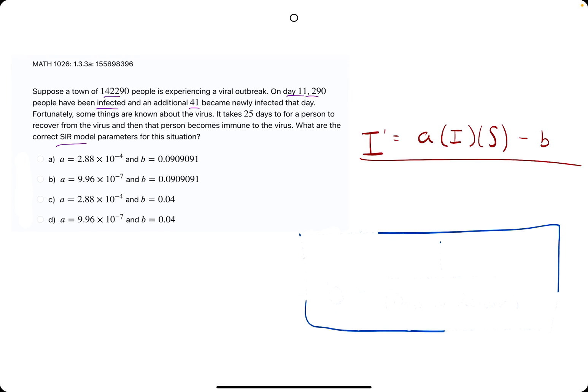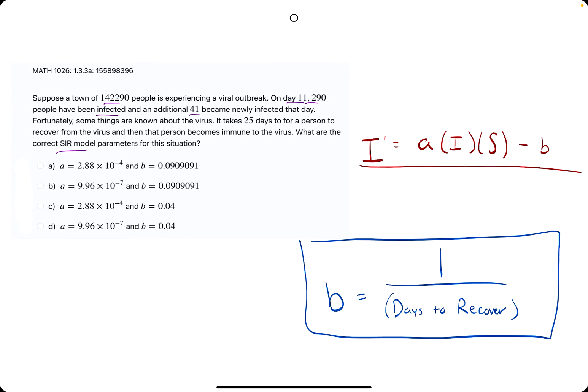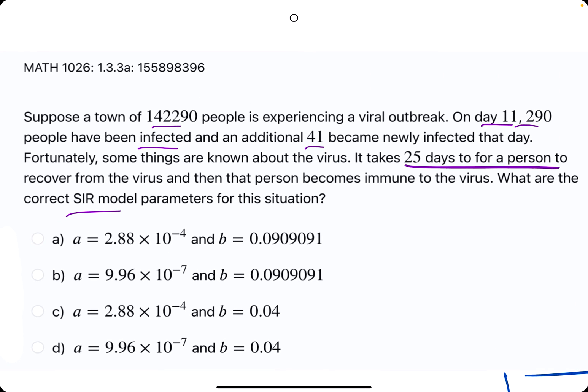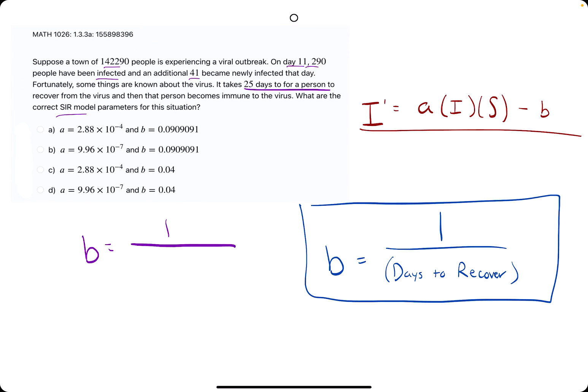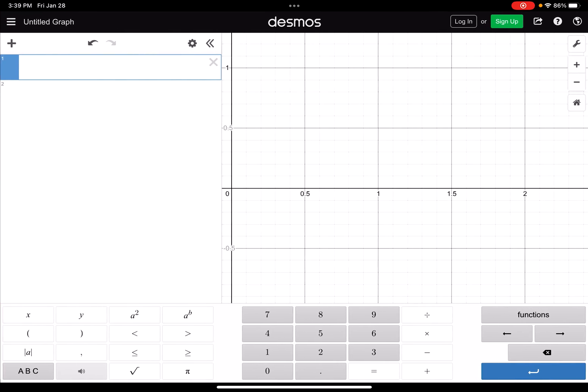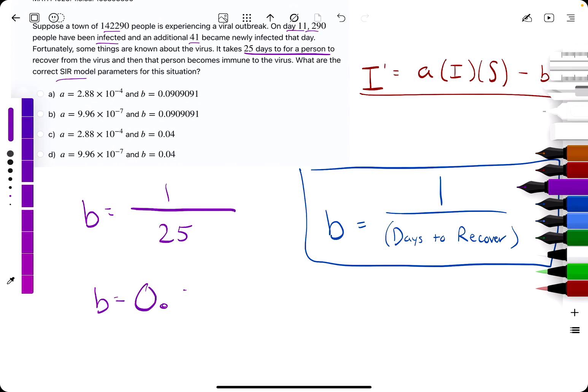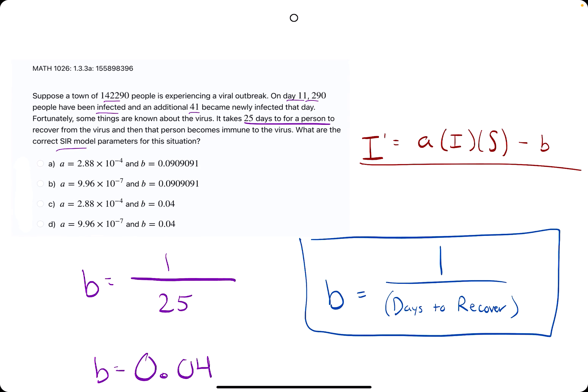Alright, so the first thing that's probably the easier of the two values to find is B. So we're going to start with that and then keep moving. B is 1 over the days, 1 divided by the days it takes to recover. So we will calculate B by doing 1 over, and if you scan through our statement here, it says it takes 25 days for a person to recover. So 1 over 25. If we open up Desmos and do 1 over 25, we get 0.04. So B is equal to 0.04, and just like that, we've narrowed down our options to either C or D.